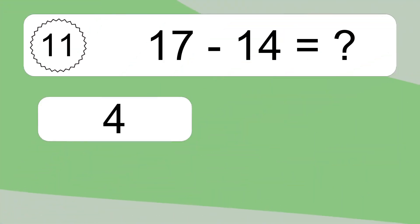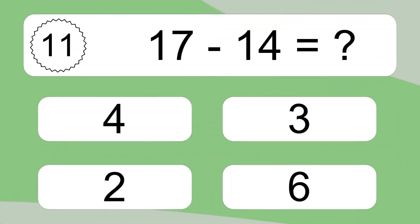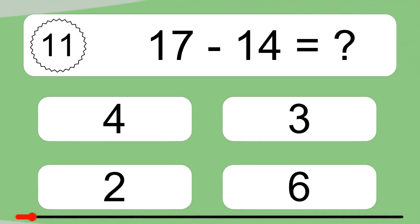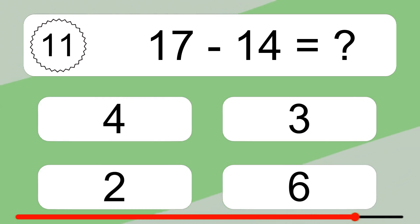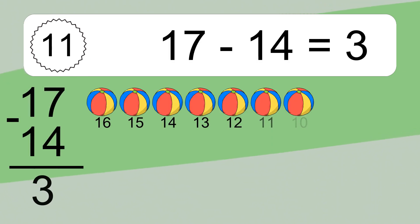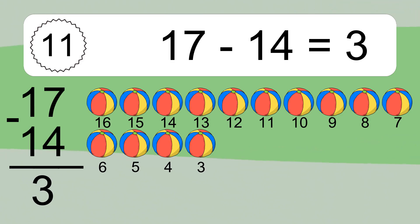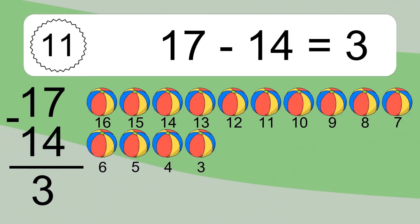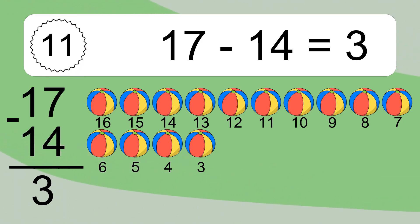17 minus 14 equals what? Let's count it: 16, 15, 14, 13, 12, 11, 10, 9, 8, 7, 6, 5, 4, 3.